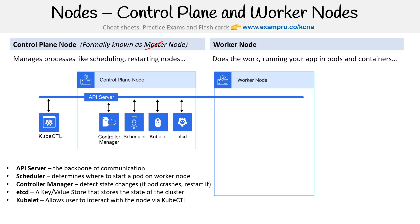The components in the control plane node can vary slightly. For example, instead of the controller manager, you might have the cloud controller manager. If you're using something like k3s, they probably have slightly different control plane components. But for the exam, you generally need to know what is in a control plane — know what these components all are and know that they are in the control plane and not in the worker nodes.